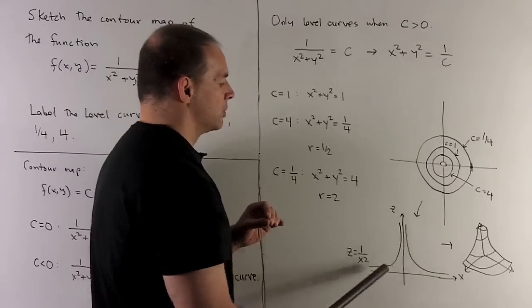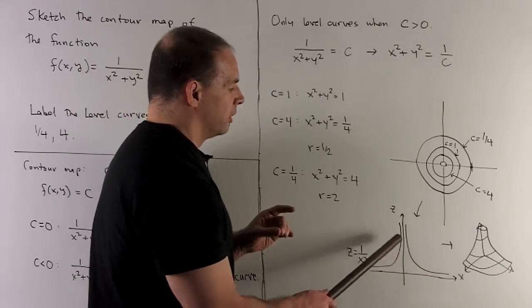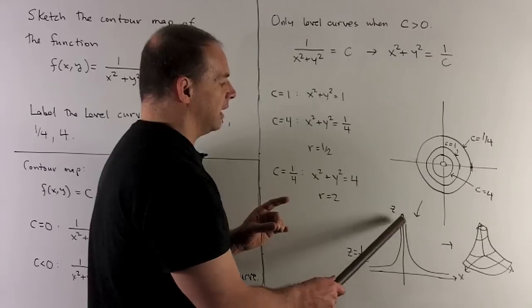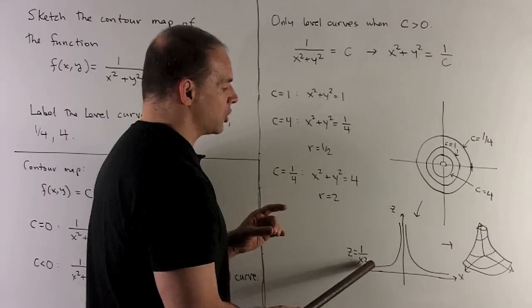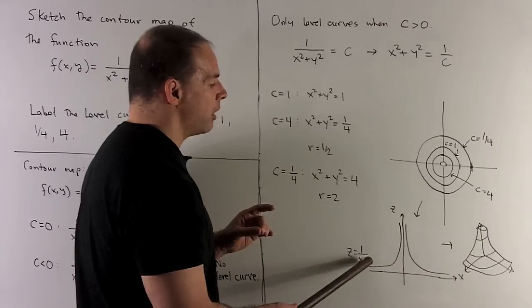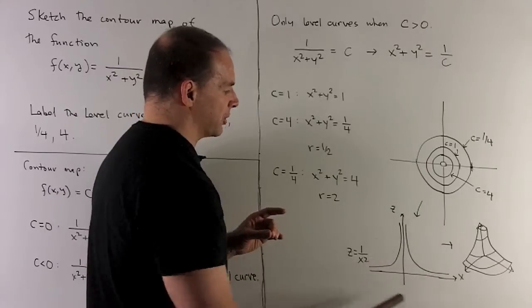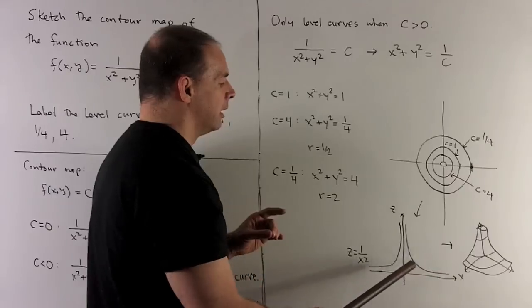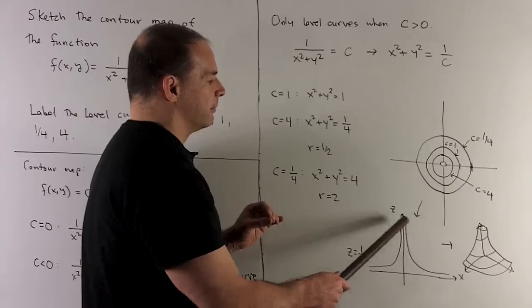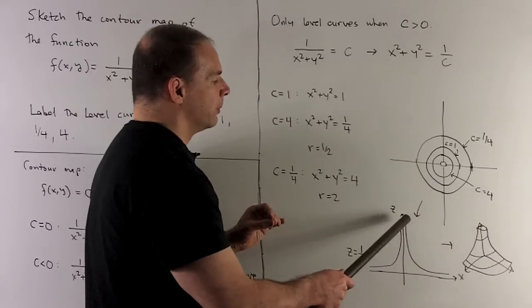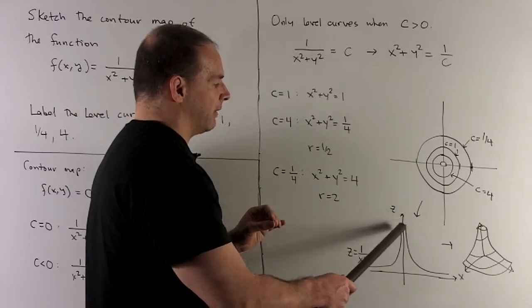You'll notice if I have c equal to a small number, that's going to correspond to height being very small - that means you're going to have a big circle. If c corresponds to a large number, that's going to mean you're looking at a large z value, so here your circles are going to be very tiny.